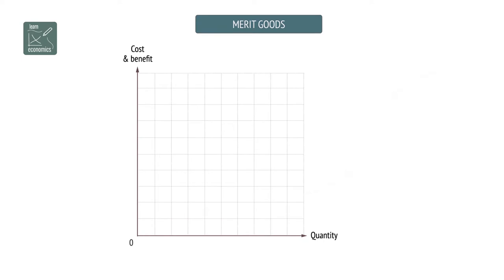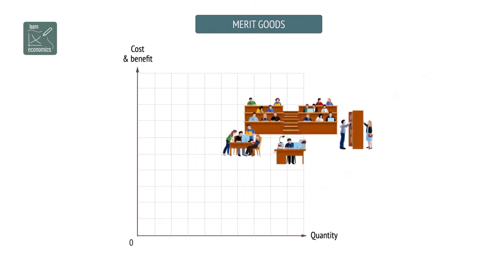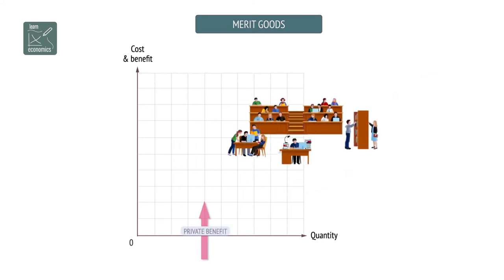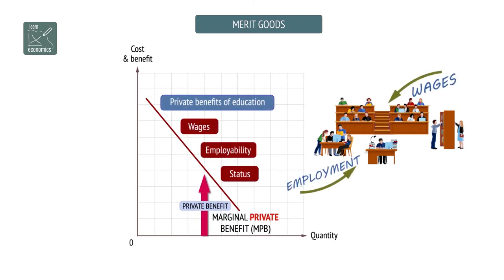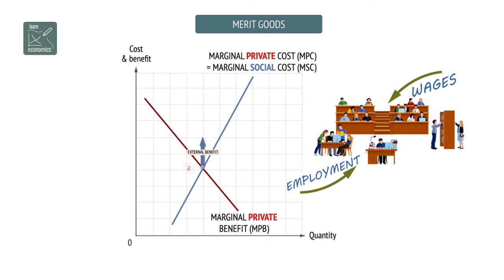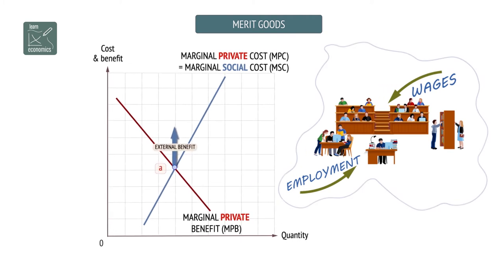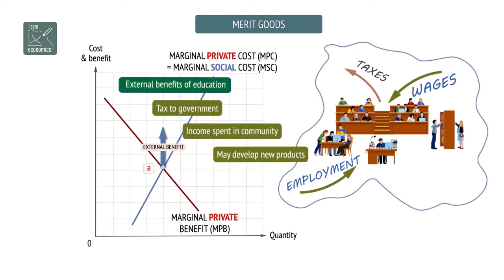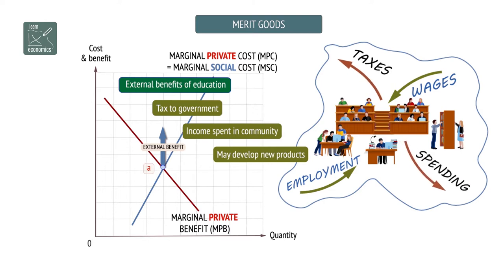Merit Goods provide external benefits when they are consumed. For example, being educated not only provides you with private benefits such as higher wages and increased employability, it also provides a benefit to others. Well educated and trained workers pay more tax and may become teachers, doctors, or eventually employers, all benefiting others and helping the economy.